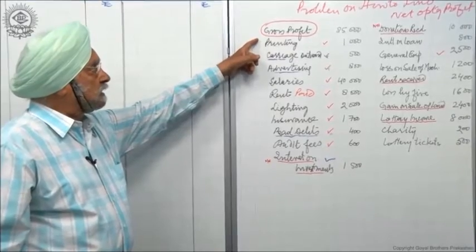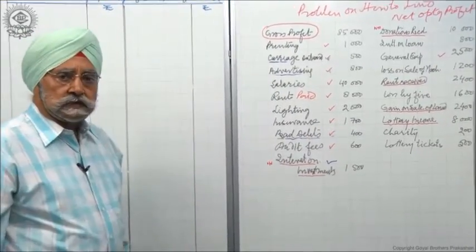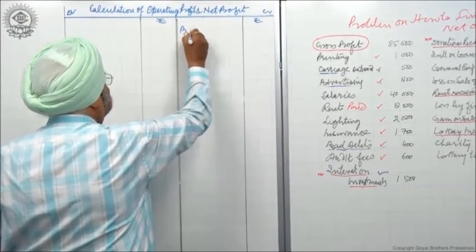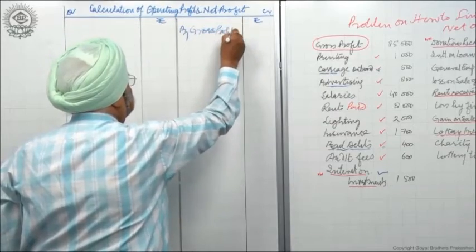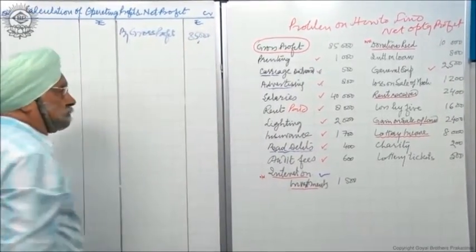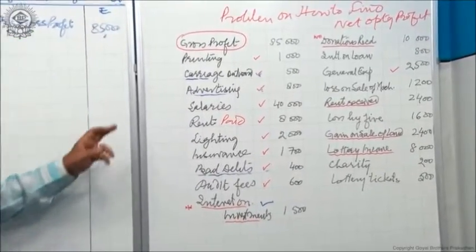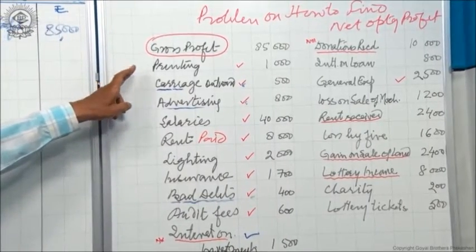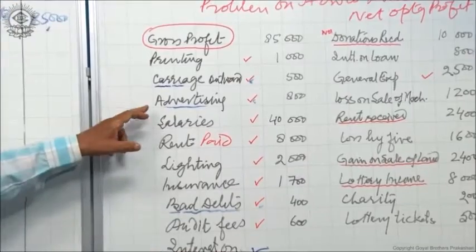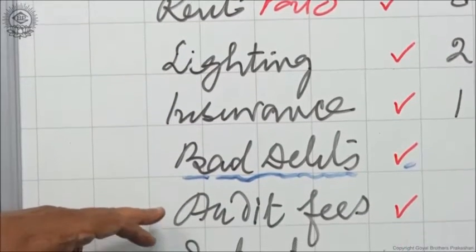The gross profit is highlighted and given as 85,000 — you do not have to prepare a trading account. We will start with gross profit of 85,000. Then from the list: printing and stationery is an operating expense, carriage outward is operating, advertising is operating, salary is operating, rent is operating, lighting is operating, insurance is operating, bad debts is operating, audit fees is operating.